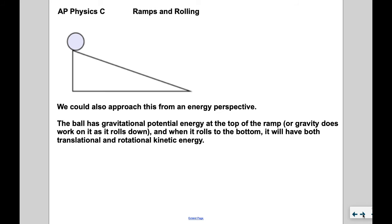We could also approach this from an energy perspective. The ball has gravitational potential energy at the top of the ramp, associated with MGH. When it rolls to the bottom, it's going to have both a linear kinetic energy term and a rotational kinetic energy term.